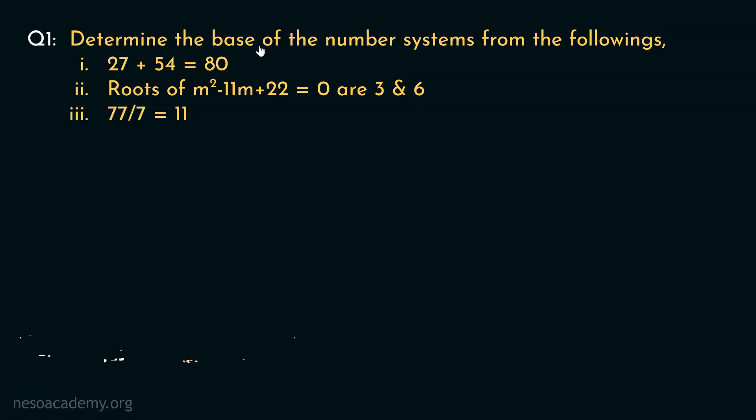Consider this question: determine the base of the number systems from the followings. We have been provided some equations and we are supposed to determine the basis accordingly. Let's begin with the first one. The equation is 27 plus 54 equals 80. It's clearly not decimal because if it had been in decimal, then 27 plus 54 would have resulted in 81, not 80. Since we don't know the base, let's assume these are of base B. Let's now convert all of them into decimal because decimal is the number system we are very much familiar with. Also, in this equation, we are supposed to perform addition and comparison of the left and right hand sides, which we humans do best in decimal.